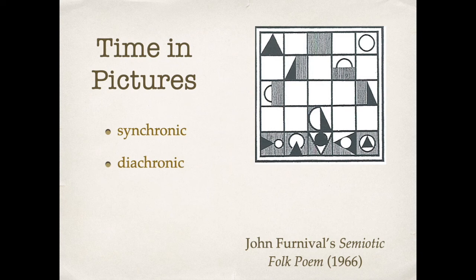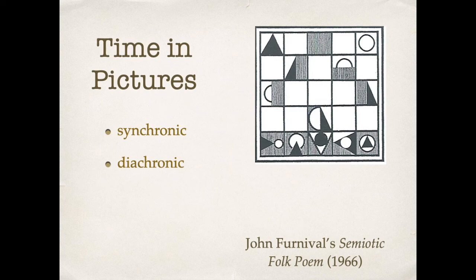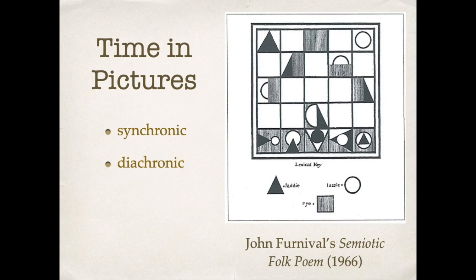In this picture here — John Furnival's semiotic folk poem from 1966 — we're looking at a picture that tells a story. It just looks like a random assortment of triangles and circles and hatch marks. And yet if we're given a clue where the symbols can suddenly be identified as figures — laddie and lassie, boy and girl in rye — we start to see how these figures and the landscape interact, suggesting this sort of amorous liaison of a boy and girl rolling around in the hay. This way in which the story tells through a picture is a really wonderful and unique phenomenon.